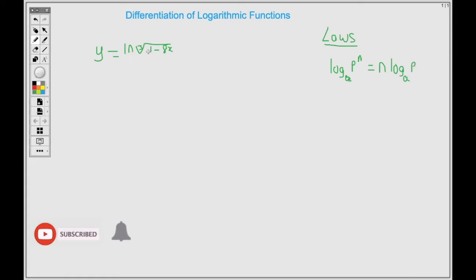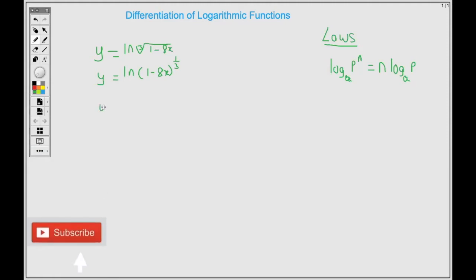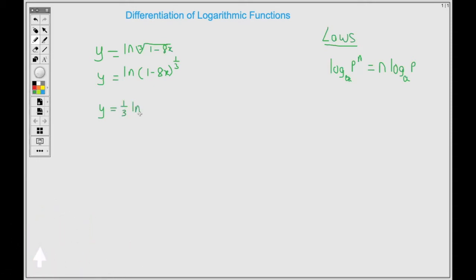So having this, we can rewrite it in a form where the cube root is the same thing as the power 1 third. So what I'm going to do is rewrite this as 1 minus 8x to the power 1 third. Now we can apply the rule that states that when we have a power, we can carry the power in front of the log. So what I'll have here is 1 third times ln of 1 minus 8x.